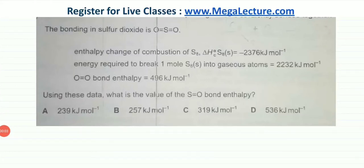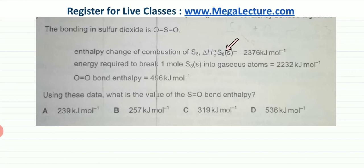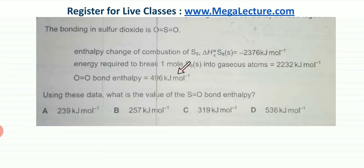The following question asks about the bonding in sulphur dioxide. The structure of SO₂ is shown, and you are given the enthalpy change of combustion of S₈, which is -2376 kJ/mol, the energy required to break one mole of S₈ into gaseous atoms, and the bond enthalpy of the oxygen-oxygen double bond, which is 496 kJ/mol. You are asked to use these data to find the value of the S=O bond energy.